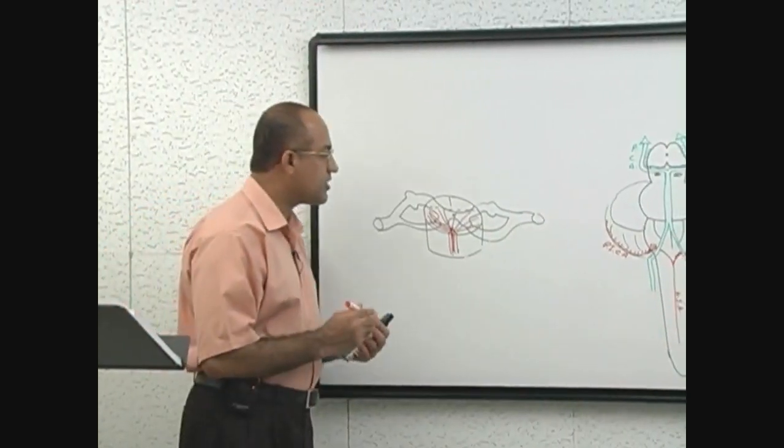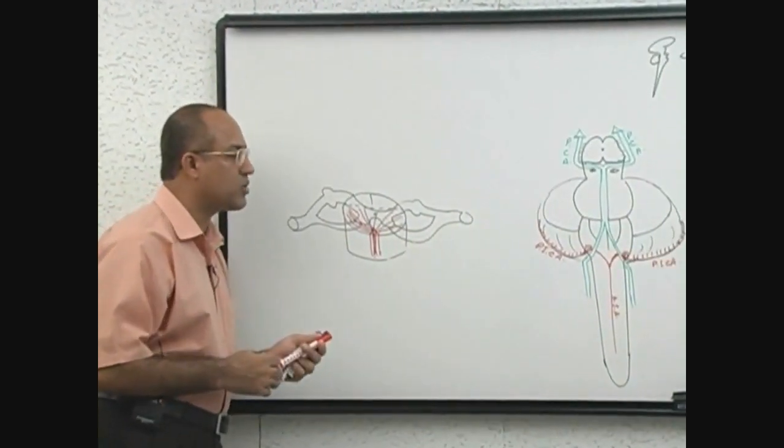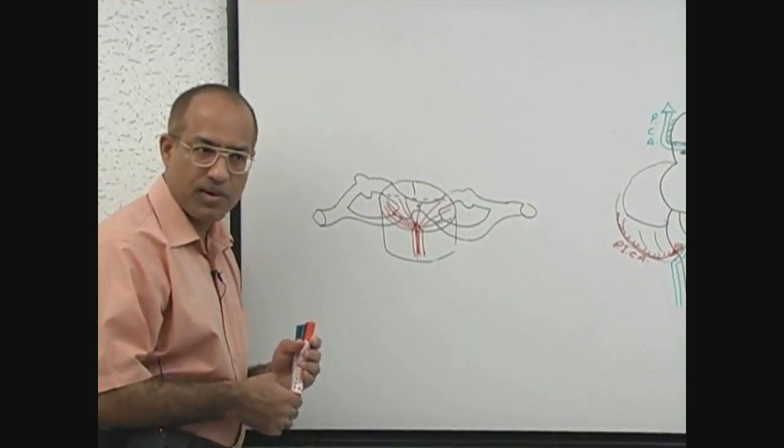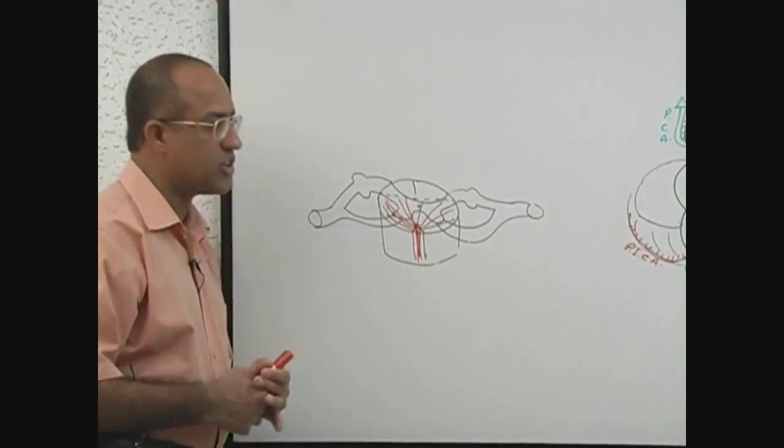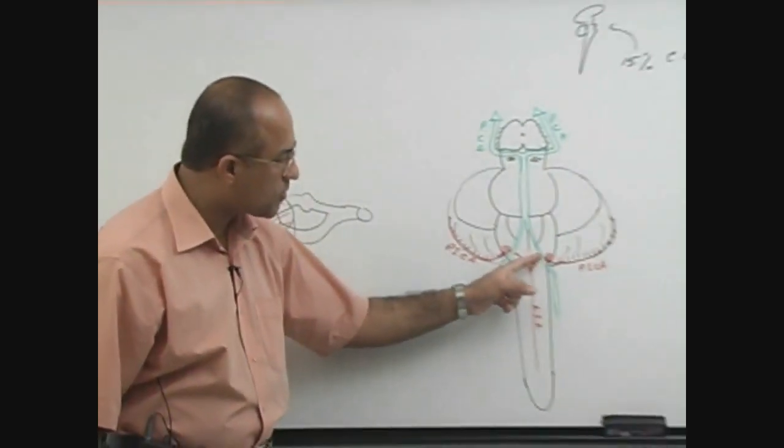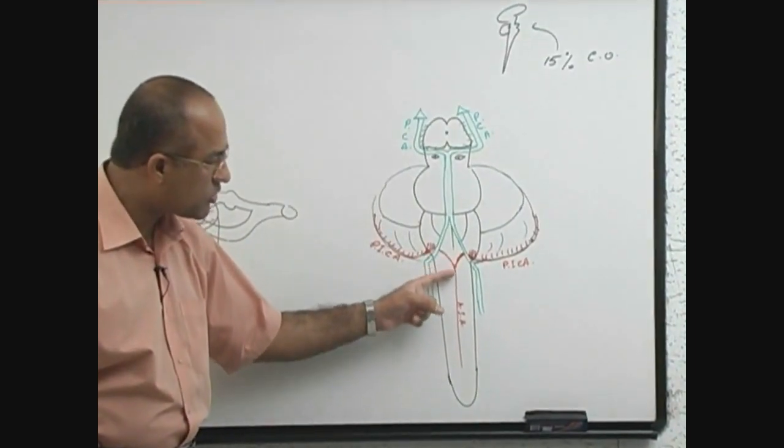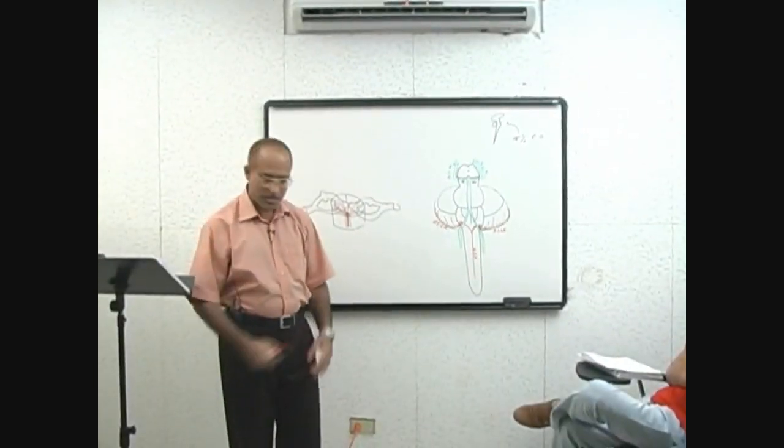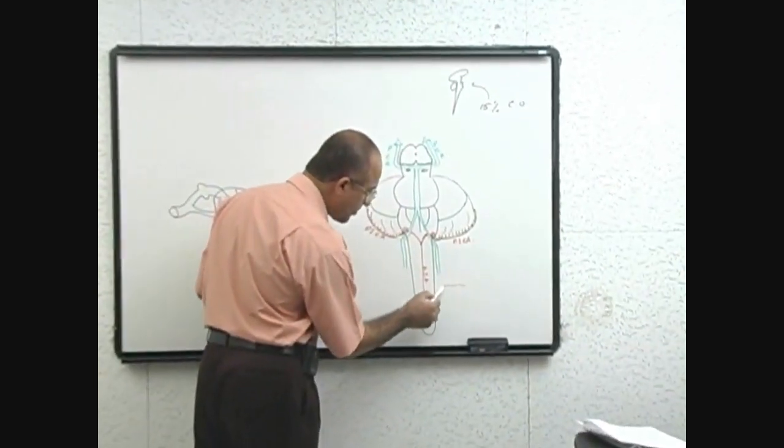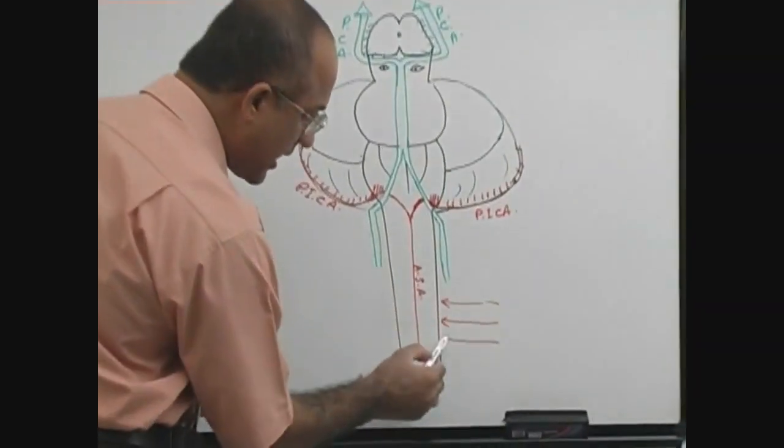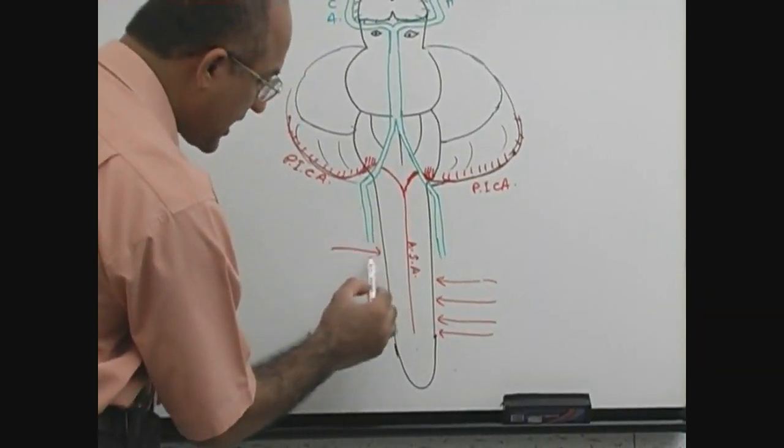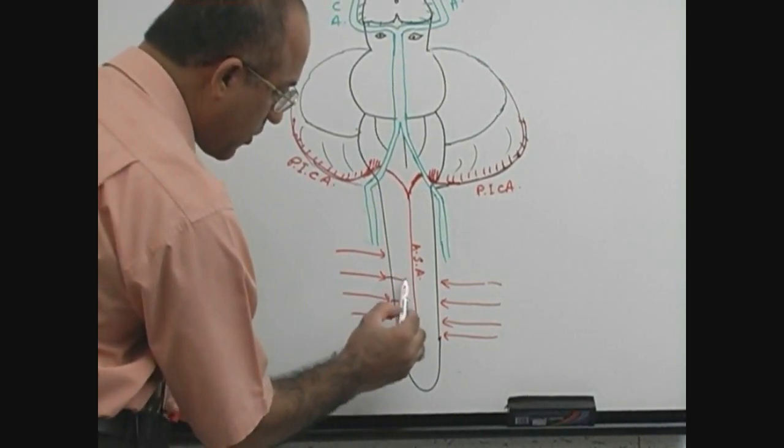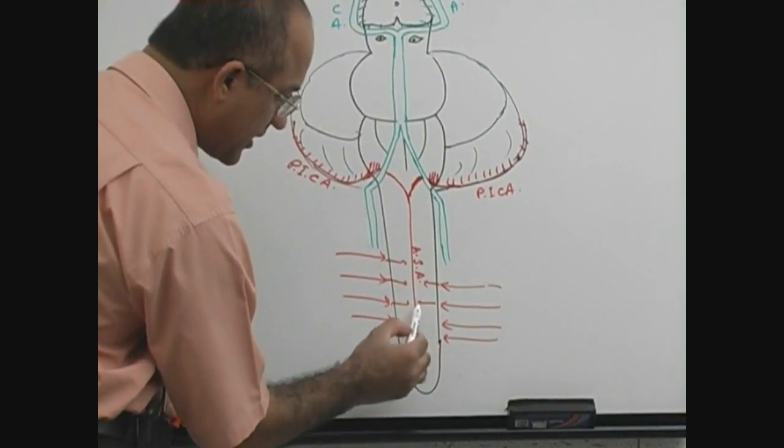So anterior spinal artery supplies about anterior two-thirds of the spinal cord. Another important thing: there is not so much blood coming from here that it will supply all the way down. Rather, there are special branches which are called segmental arteries which are coming at multiple levels to reinforce the blood flow to the anterior spinal artery.